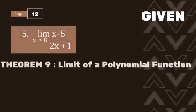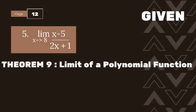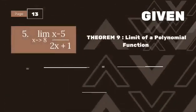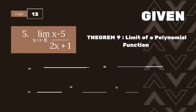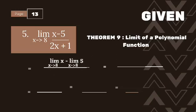The theorem used in number 5 is also Theorem 9, the limit of a polynomial function. Our last equation is the limit of (x minus 5) over (2x plus 1) as x approaches 8. We separate the expression: the limit of x as x approaches 8, minus the limit of 5 as x approaches 8, over the limit of 2x as x approaches 8, plus the limit of 1 as x approaches 8.